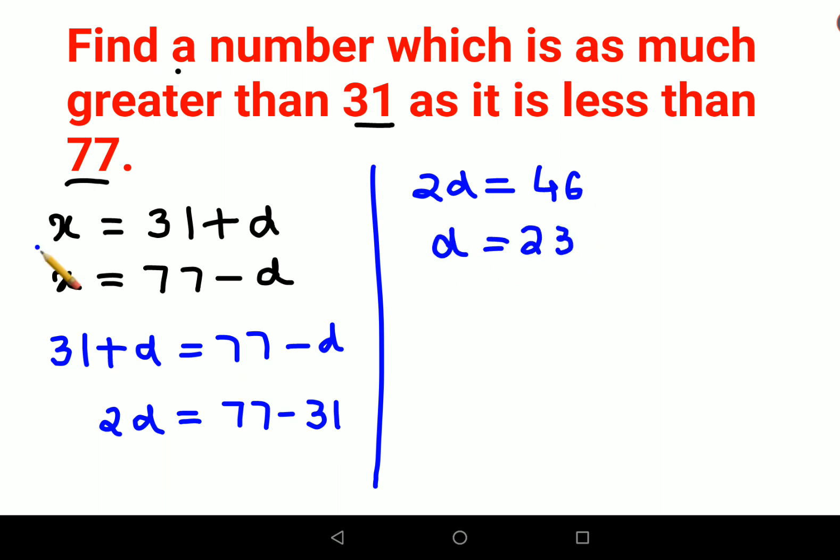The number is—we can put the value of d in either equation. So the value of x is 31 plus d which is 23.